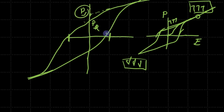However, in reality some of these domains switch back and we don't retain all the switched domain states. Therefore some of them switch back and we end up with a remnant polarization.